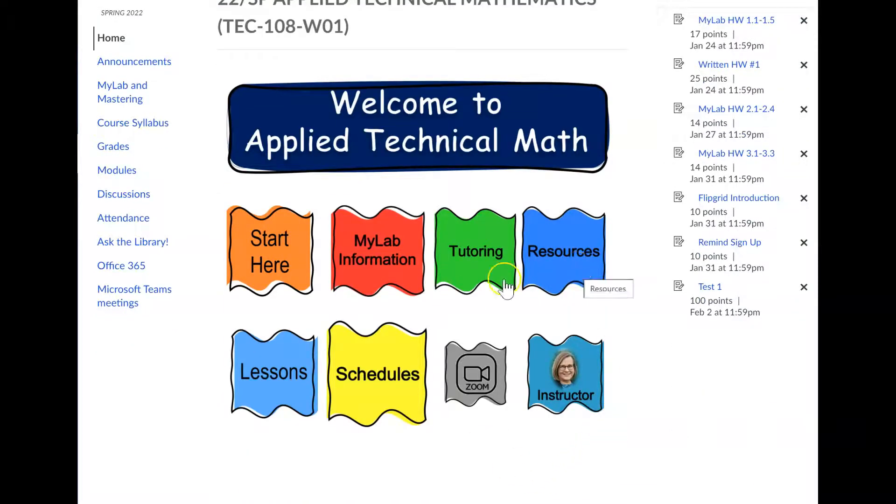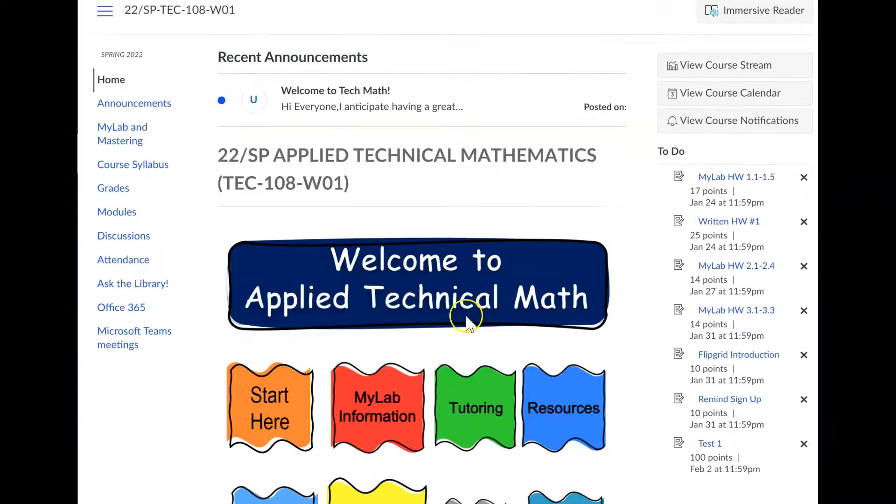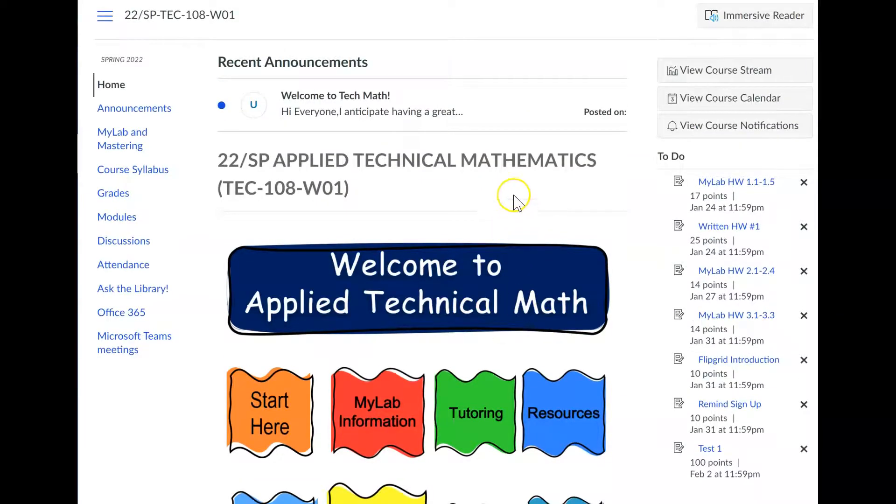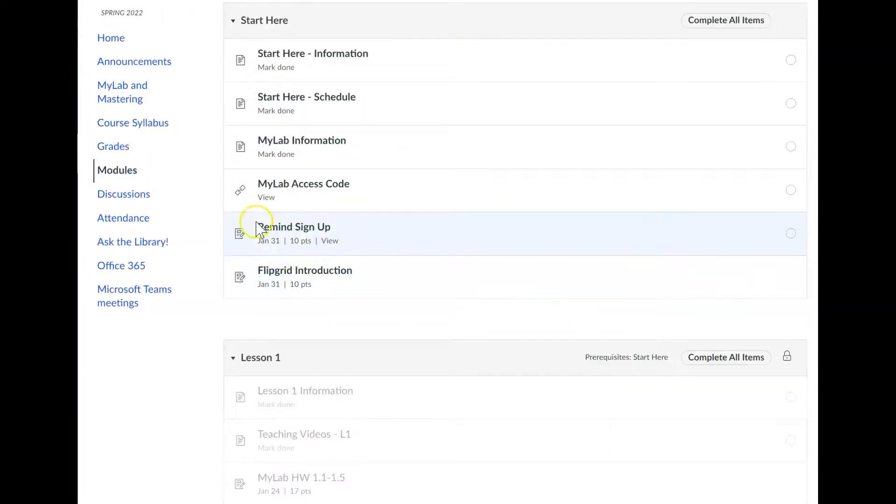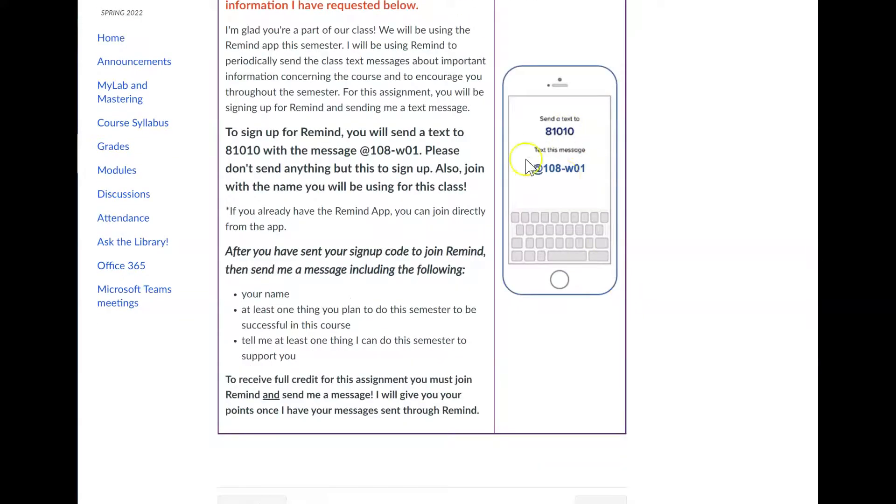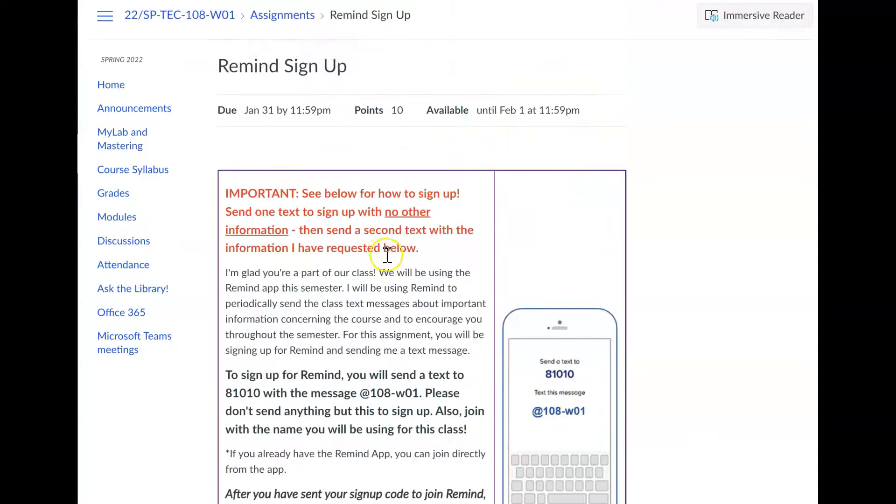Resources just has some different things on there. This takes you to the lessons, but so does modules. So, you know, I have different ways that you can get there. That's the Zoom link. So if we ever set up a Zoom, this is where you would go to get that started. And then basically just get on here and click on stuff. Click on everything that you see and just get started with all the things that are important to know right in the beginning. Don't forget about your syllabus. The remind sign up for the text messaging. It tells you what you need to do. Please read all of this before you sign up or anything so that you do that correctly.